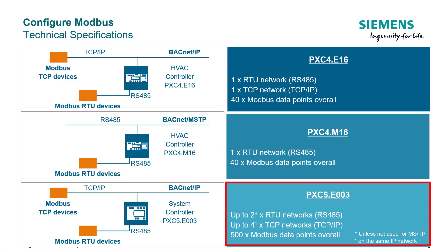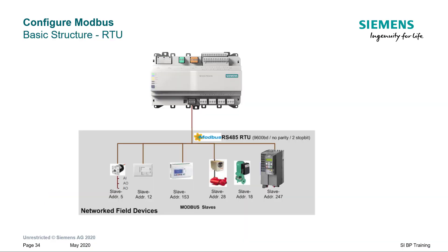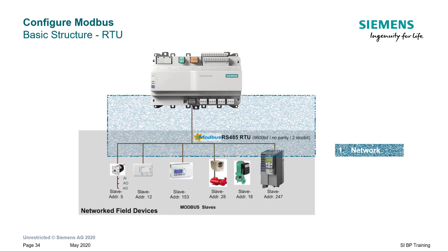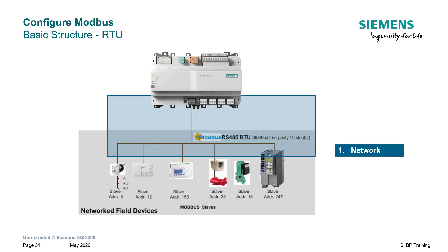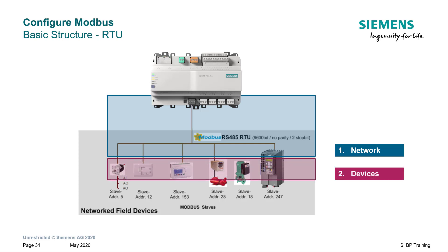The total number of Modbus data points supported is 500. For RTU devices, first it is required to set up a Modbus RTU network. Then all the devices can be added to this network, and finally the data points corresponding to each device can be added.